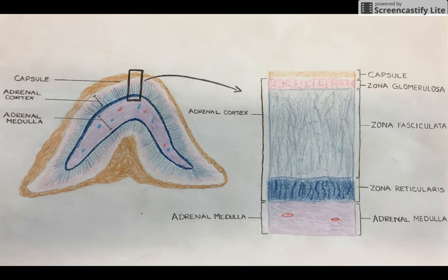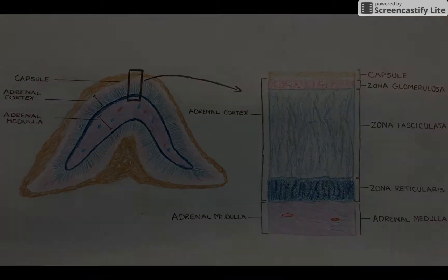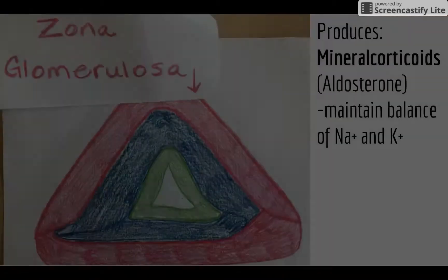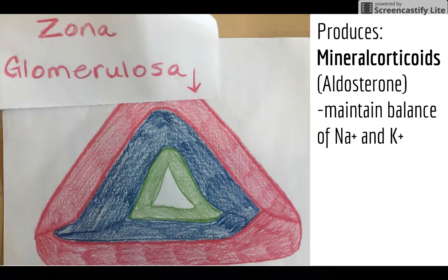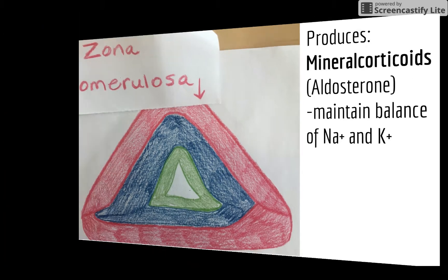Three different types of corticosteroids are produced by the three layers of the cortex. The outermost layer is called the zona glomerulosa, and it produces mineralocorticoids, primarily aldosterone, which maintains your body's sodium and potassium balance.